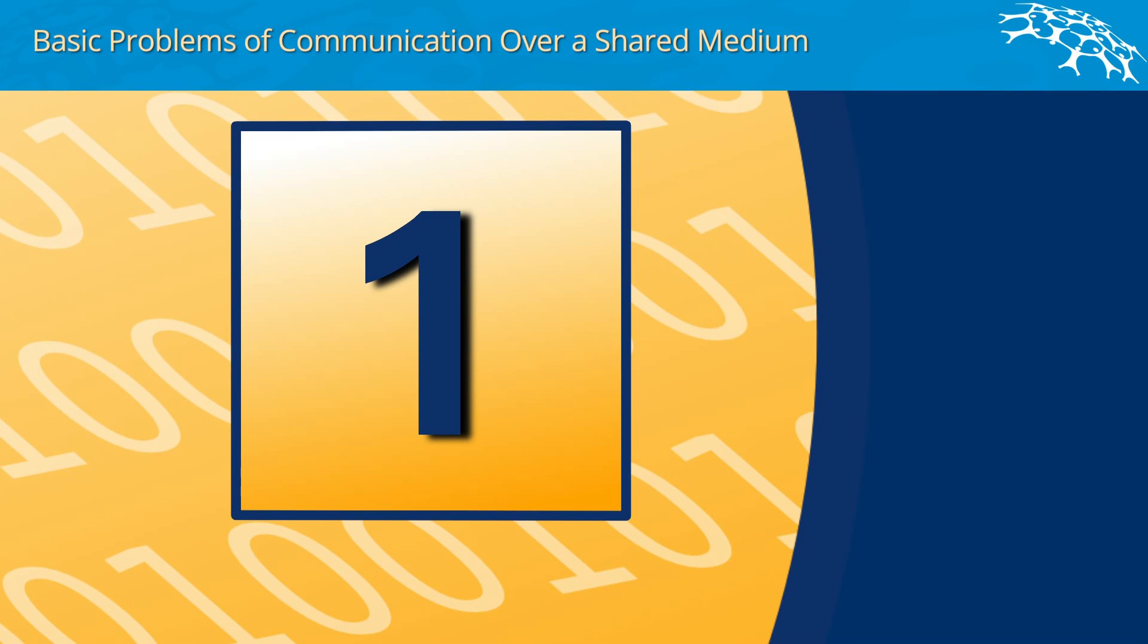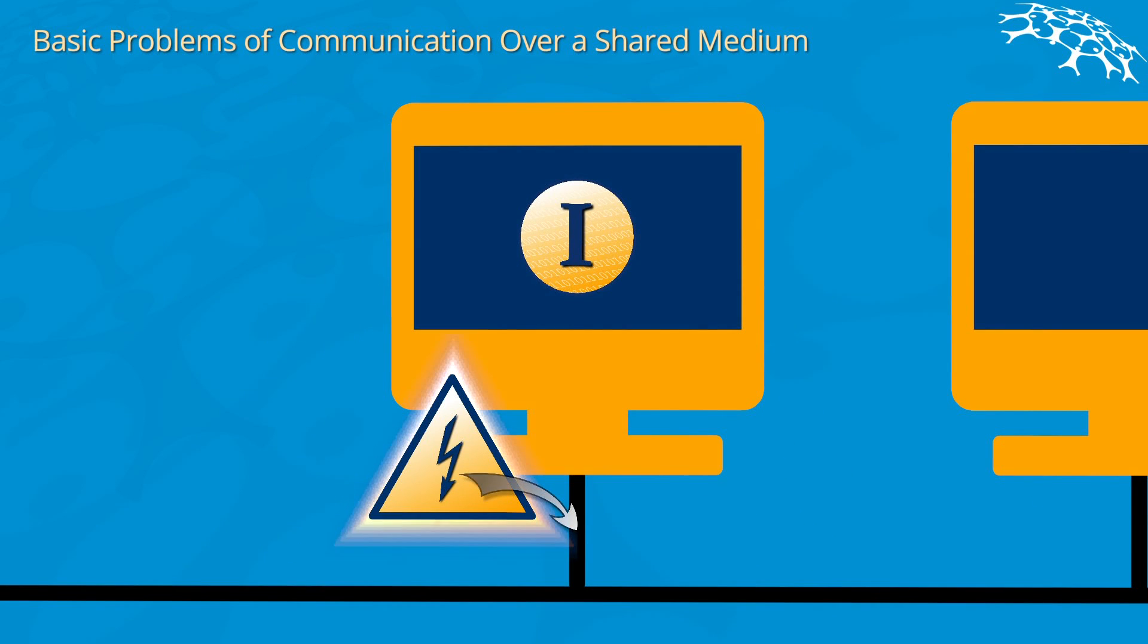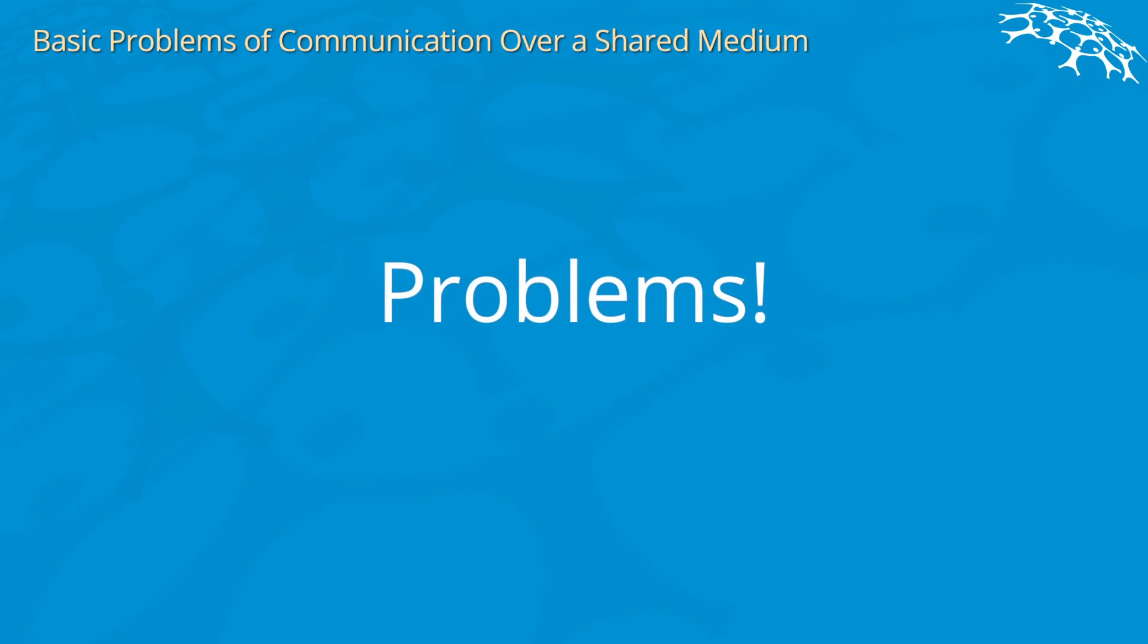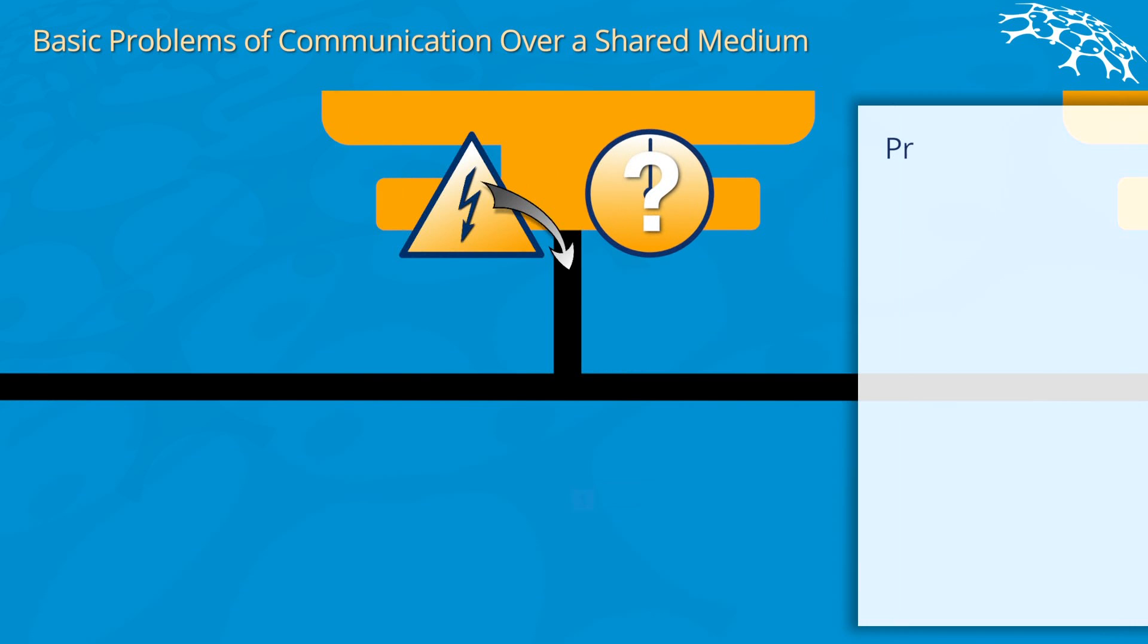A naive approach in transferring this one bit is you could put a voltage on the cable. If you do this, several problems arise. One problem is, how long do you actually have to put the voltage on the cable? Because if you just start putting the voltage on the cable, this electromagnetic wave starts to propagate through the cable, and you have to ask yourself, how long do I actually have to do this so that others can measure this?